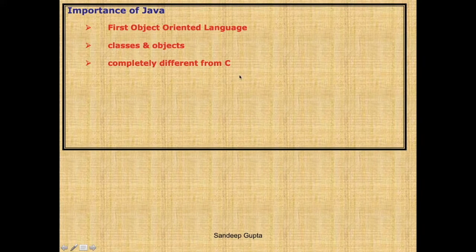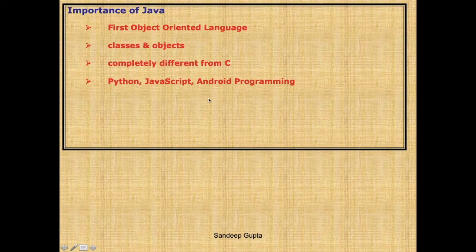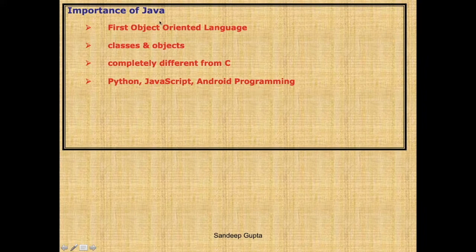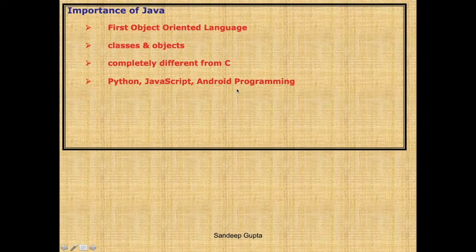If you don't study Java properly, you will never understand how to use classes and objects properly. In your subsequent semesters you will have Python in sem 4, JavaScript in sem 5, and Android programming in sem 7. In all these languages and technologies you need to use the concept of classes and objects. So if you have not done Java properly, you will struggle in all of these subjects. That is why you should take Java very seriously.